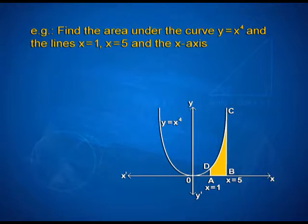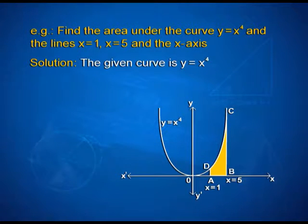Now, let us look into an interesting example here. Find the area under the curve y = x⁴ and the lines x = 1, x = 5 and x-axis. For the solution, the given curve is y = x⁴ with the x-axis and y-axis and the ordinates x = 1 and x = 5.